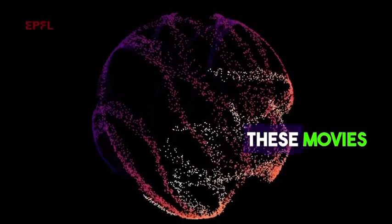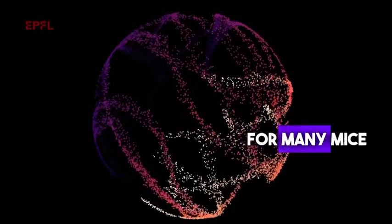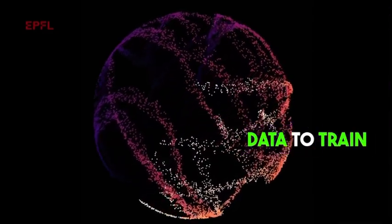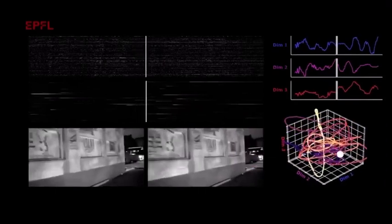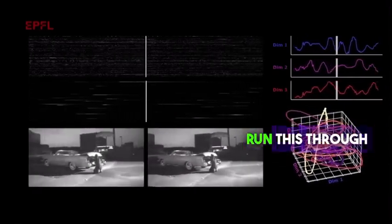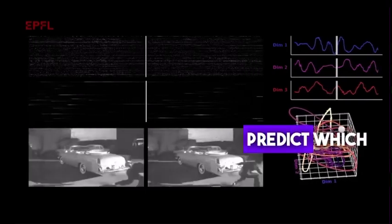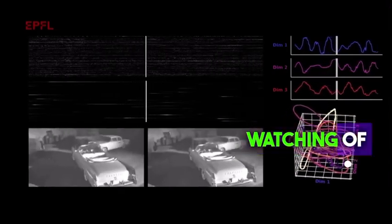We record from the brains of these genetically engineered mice while they watch movies. We can do this for many mice and use that as training data to train the base algorithm in Zebra. Then, given a new mouse whose neural data we've never seen, we run it through the algorithm and it can predict which movie frame the mouse is actually watching.